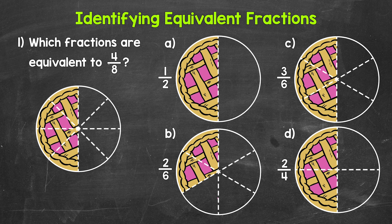Let's jump into number one, where we have: which fractions are equivalent to four eighths? We have four eighths shown right here with a pie. There were eight pieces in total and four are left, so four eighths of the pie is left. We need all of the equivalent fractions — all of the pies with the same amount left, the same part of the whole pie left.